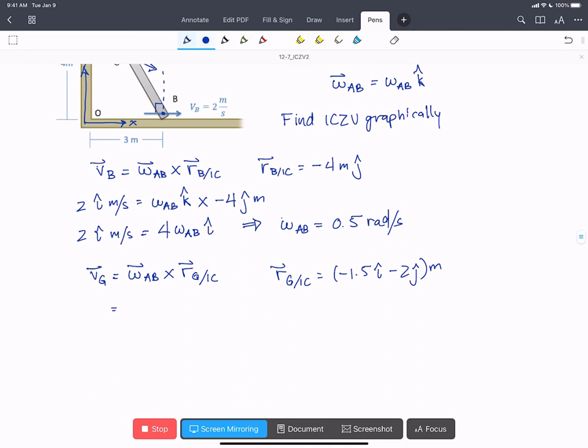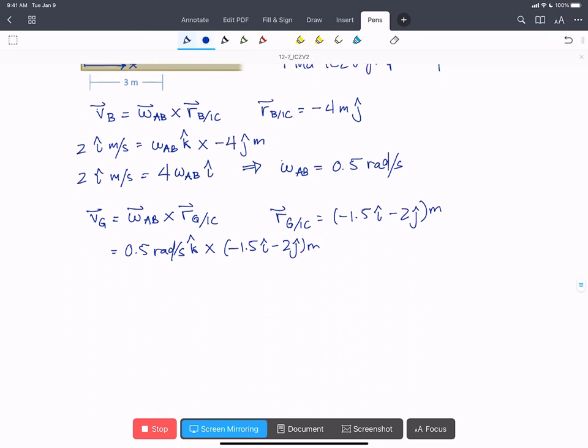So we know omega AB, that's 0.5 radians per second in the k-hat. We can cross that with minus 1.5 i-hat minus 2 j-hat meters. And when we work that out, that ends up being VG equals 1 i-hat minus 0.75 j-hat meters per second.